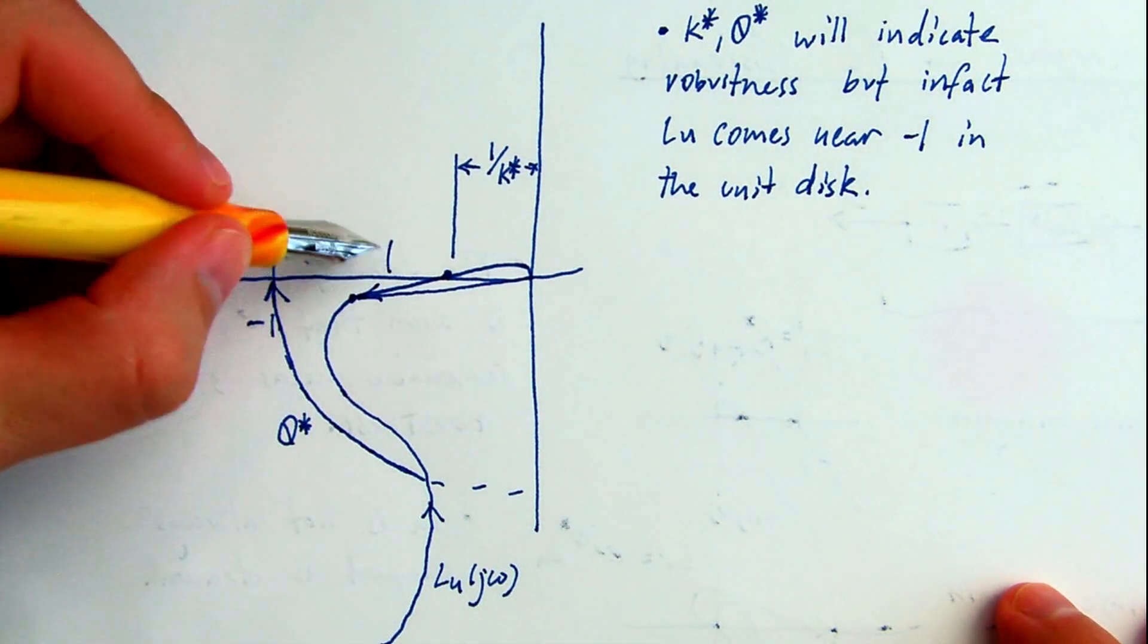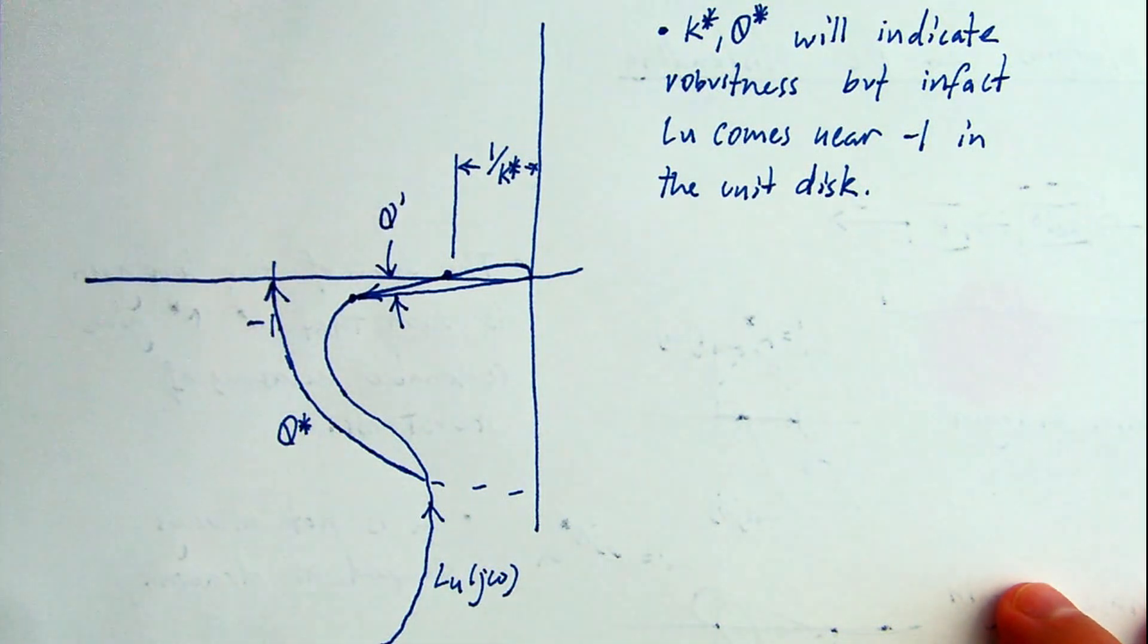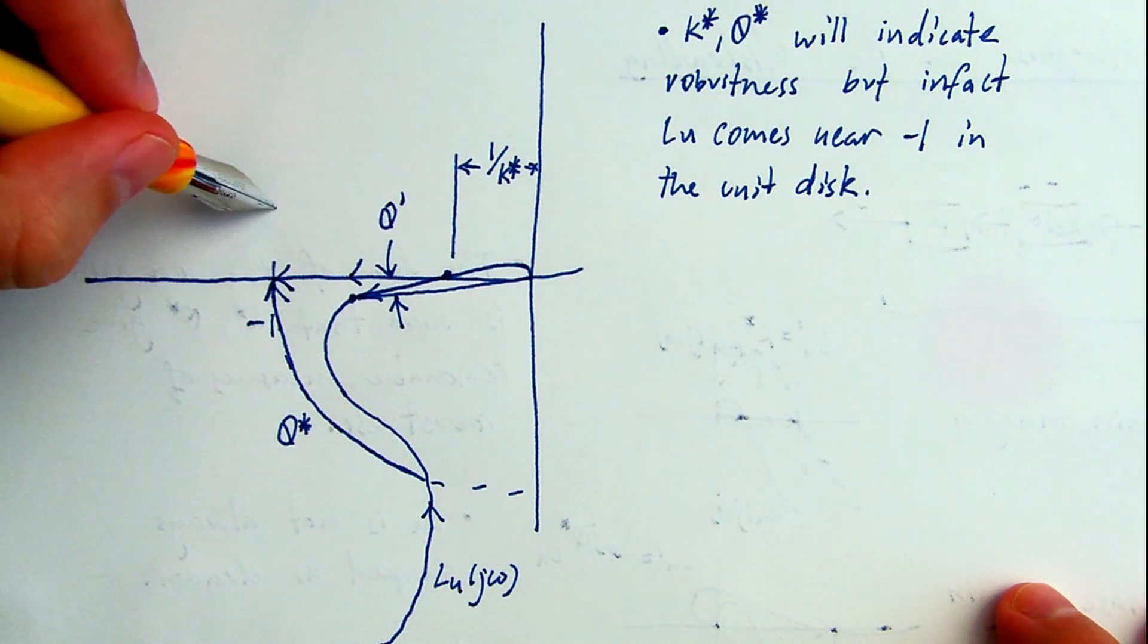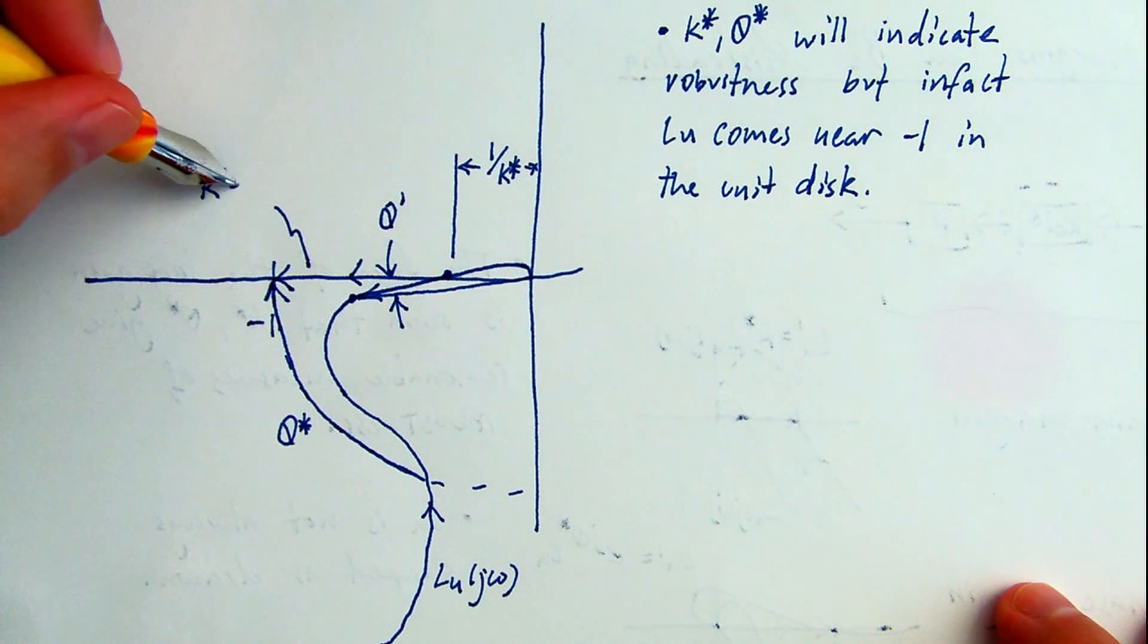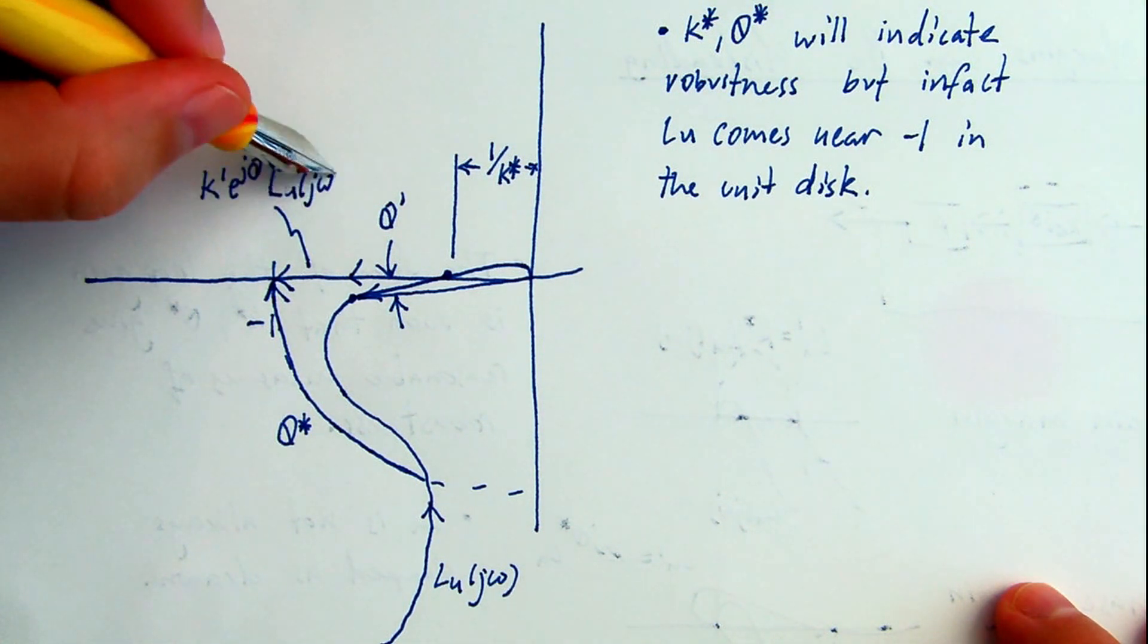Let's just consider a phasor somewhere in that bulge that's close to the critical point. If we rotate that phasor by theta prime and then scale it by k prime, we can make that phasor also touch the critical point.